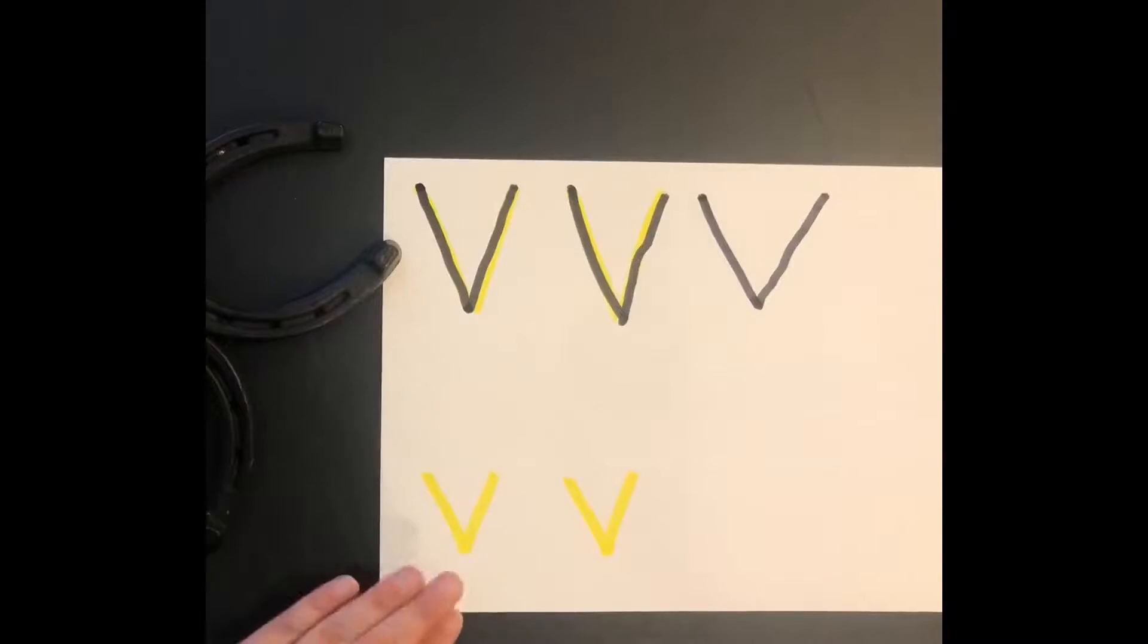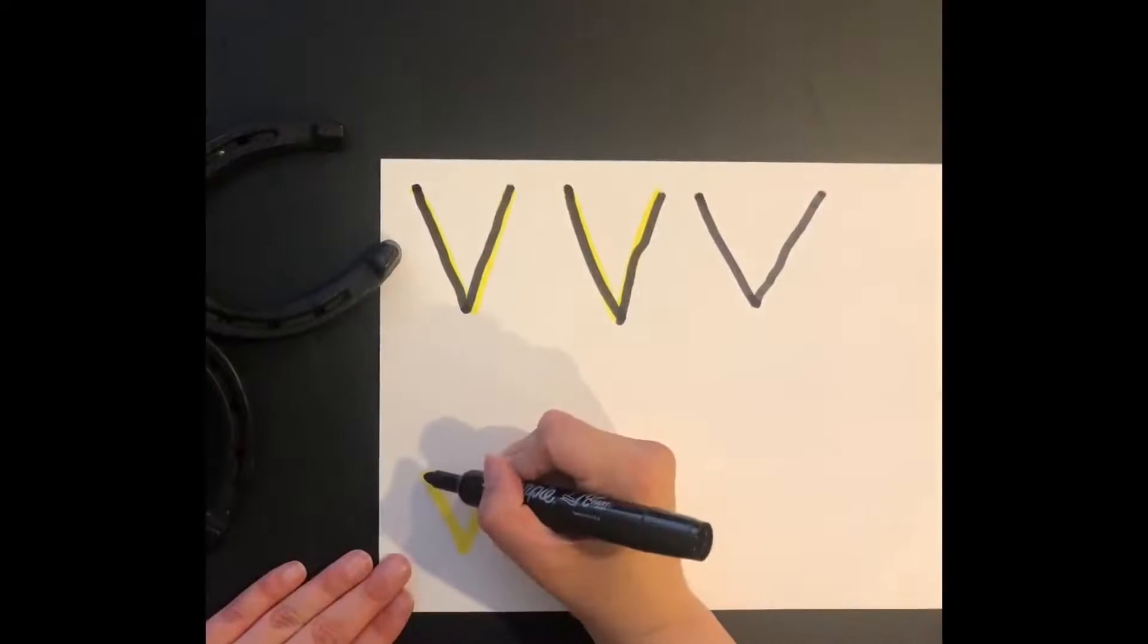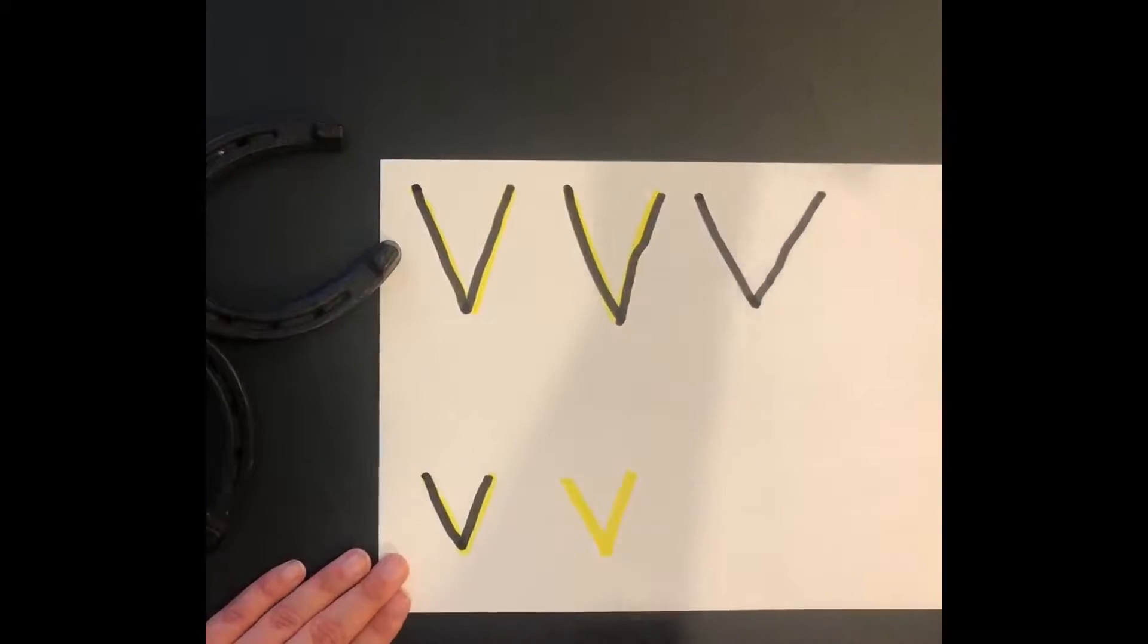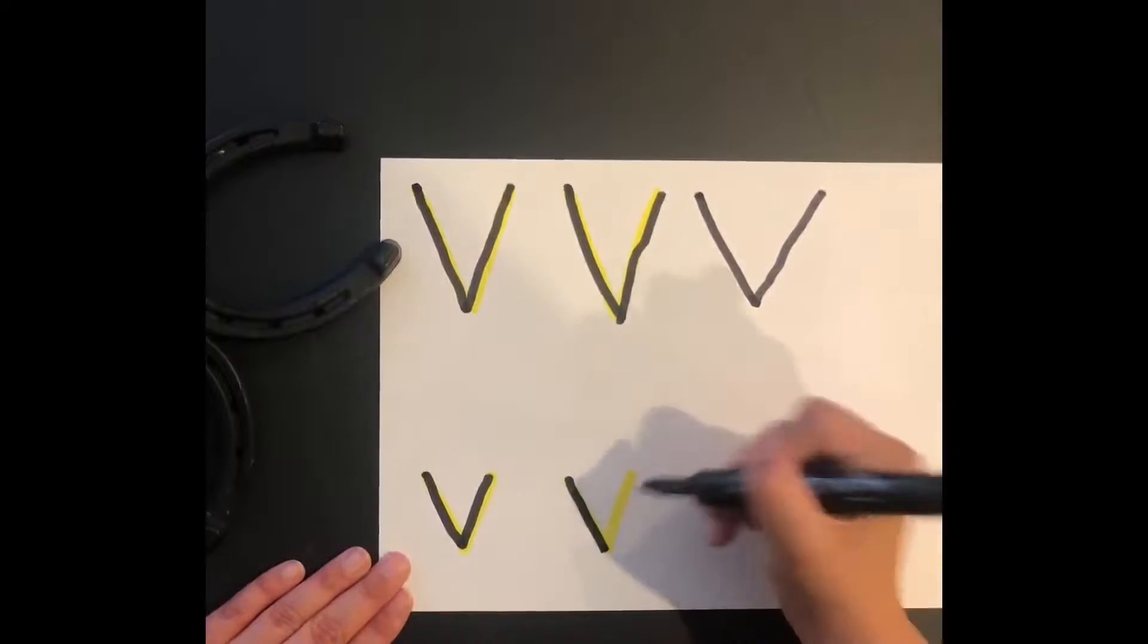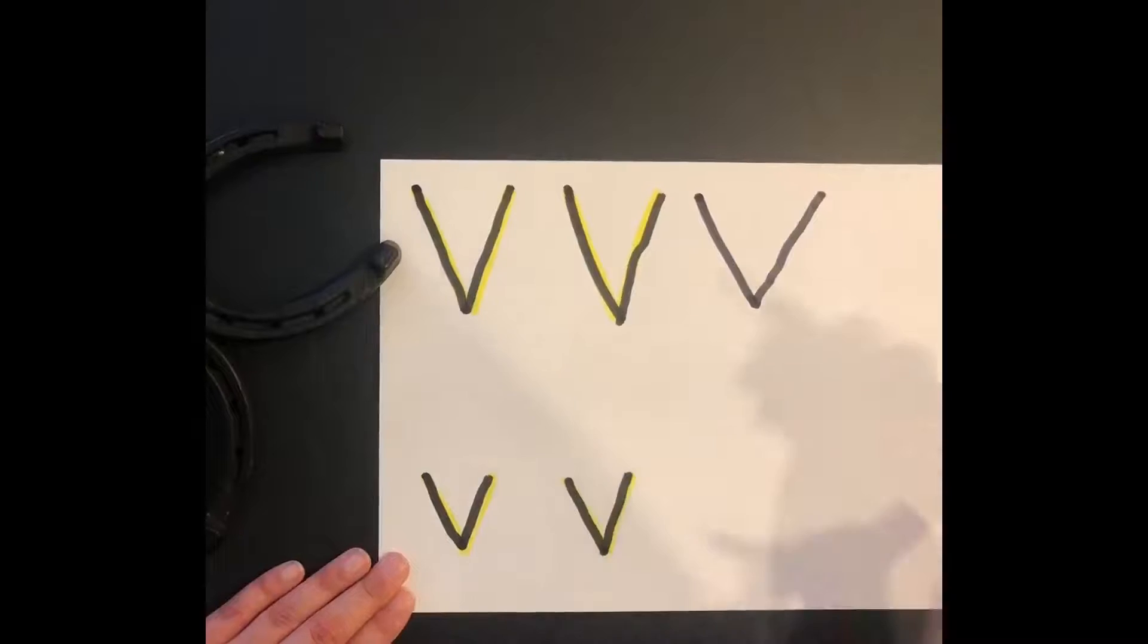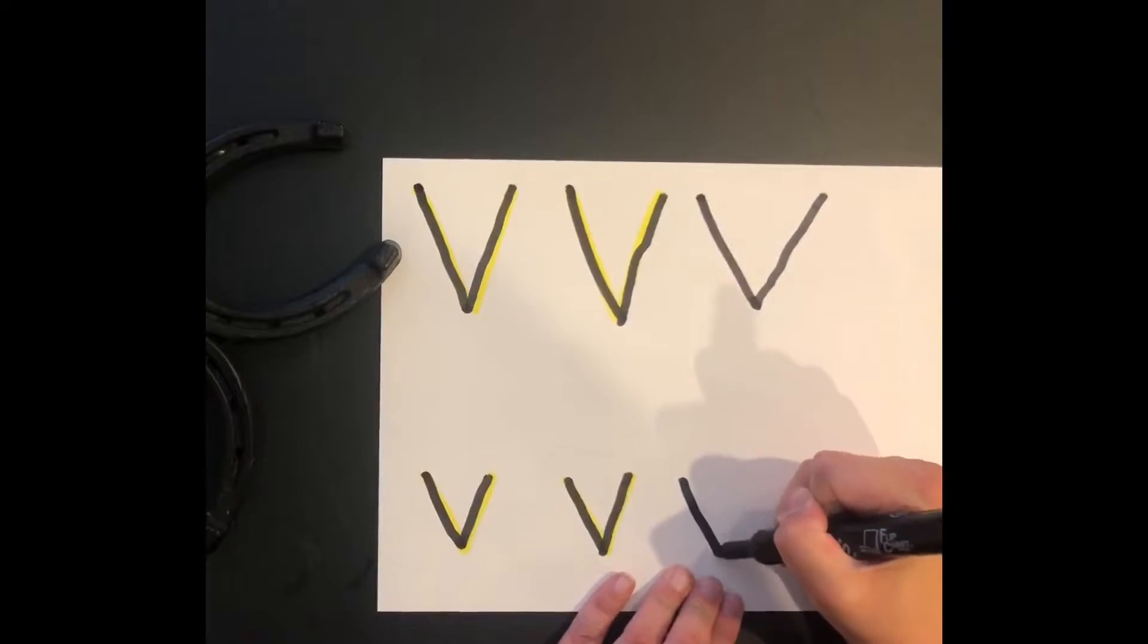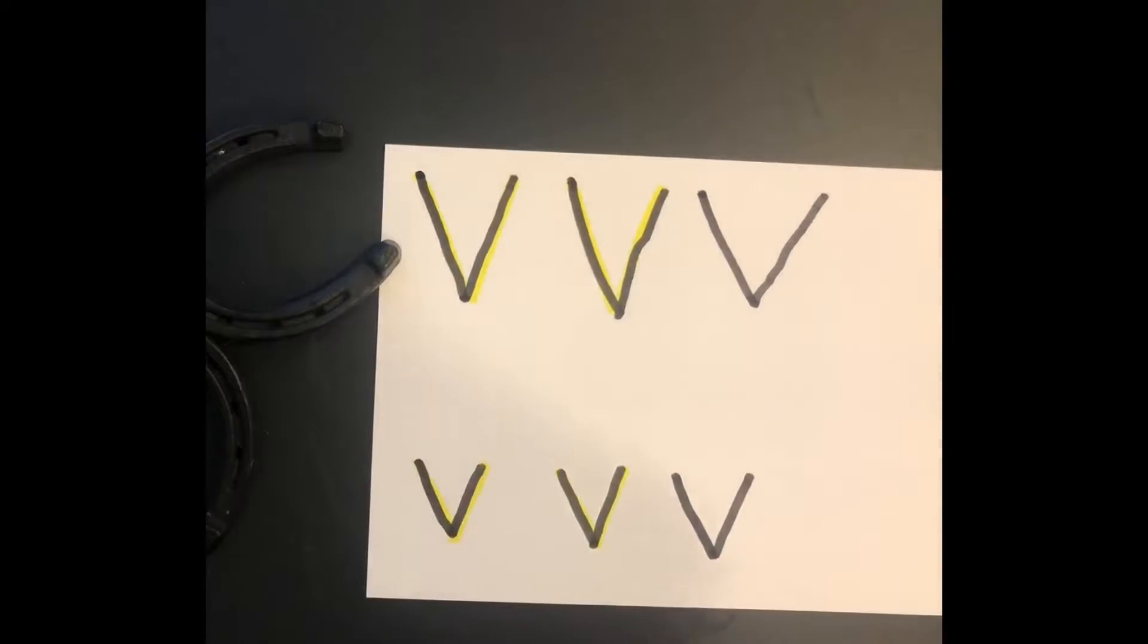So for this one, you start at the middle line, and you do the same thing. You make a slanted line right, and then you slant back up to the top. So you slant right, and slant up to the top. Once again, from the middle line, you're going slant right, and then slant up to the top. And that is how you make a lowercase V.